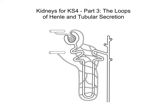Hello everyone. This is the third video in a sequence on kidneys entitled 'Kidneys for Key Stage 4', where we look at the structure and function of the kidneys and go through all of the processes involved at each section. In this part, we're going to look at the loops of Henle and a process known as tubular secretion.